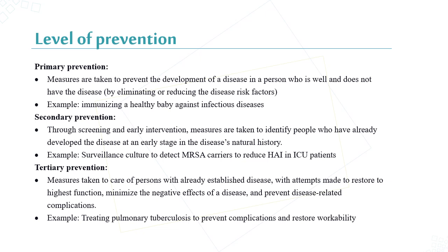We have three levels of prevention: primary, secondary, and tertiary. In primary prevention, measures are taken to prevent the development of disease in a person who is well and does not have the disease — by eliminating or reducing disease risk factors. A key example is immunizing a healthy baby against infectious disease. Secondary prevention is through screening and early intervention — measures are taken to identify people who have already developed disease at an early stage. An example is surveillance culture to detect MRSA carriers and reduce healthcare-acquired infections in ICU patients. Tertiary prevention means taking measures to care for persons with already established disease to restore the highest function, minimize the negative effects of disease, and prevent disease-related complications. An example is treating pulmonary tuberculosis to prevent complications and restore workability.